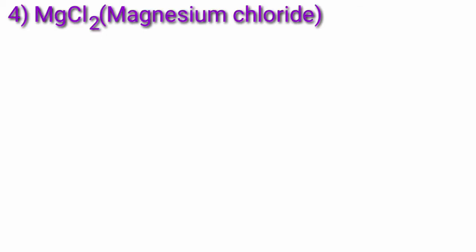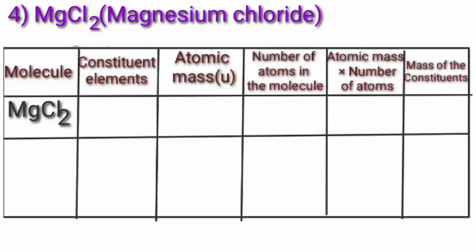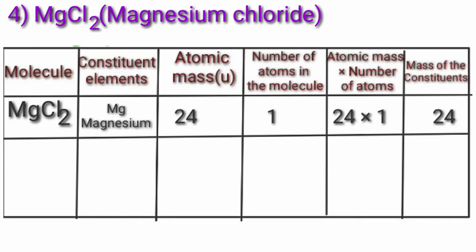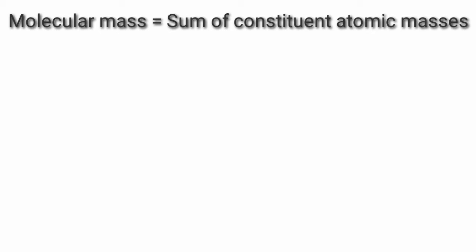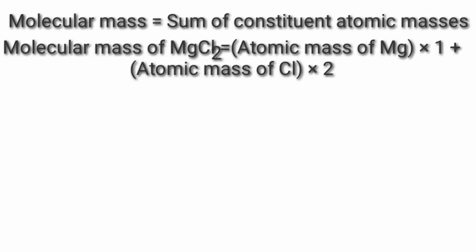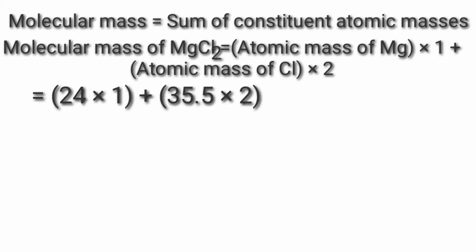Fourth, MgCl₂ — magnesium chloride. Constituent elements: magnesium atomic mass 24, chlorine atomic mass 35.5. Molecular mass is equal to sum of constituent atomic masses. Molecular mass of MgCl₂ = (24×1) + (35.5×2) = 24 + 71 = 95.5 Dalton.